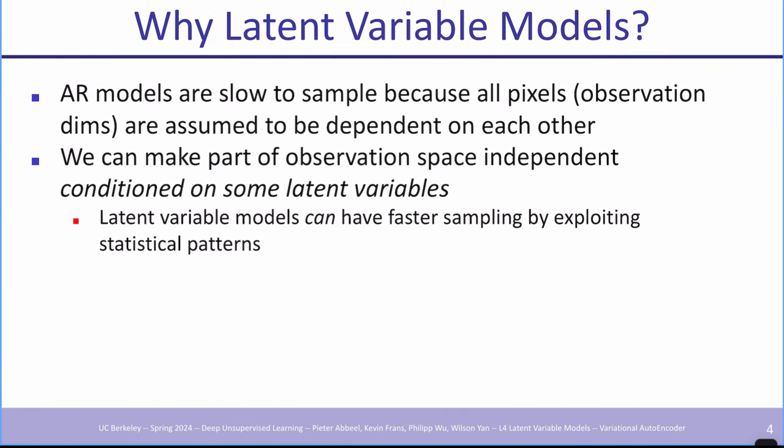The hope could be that a good generative model would take an image, project it onto that kind of explanation, and reproject it back. Why latent variable models compared to autoregressive models? Autoregressive models are slow to sample because all pixels — the observational dimensions — are assumed to be dependent on each other. You have to wait for the previous pixel to be sampled before you can sample the current pixel. You can do caching to avoid repeat computation, but you still have to wait.